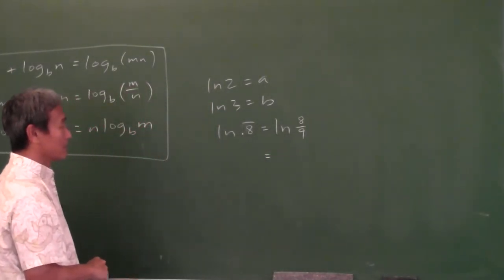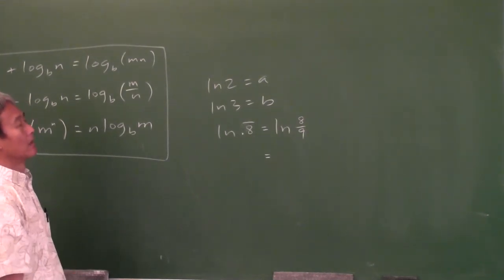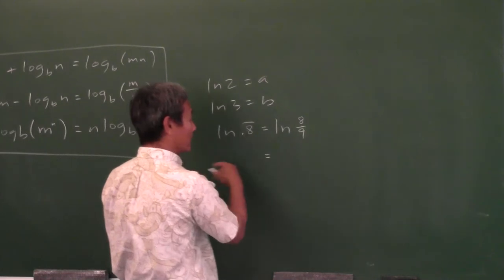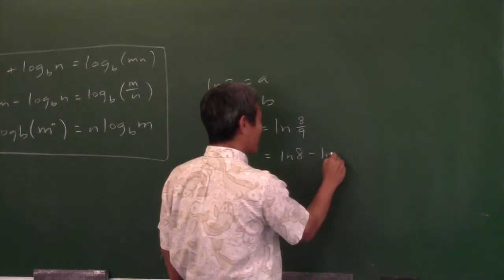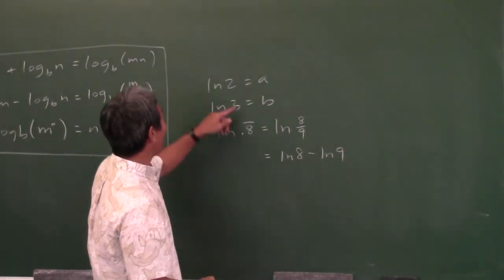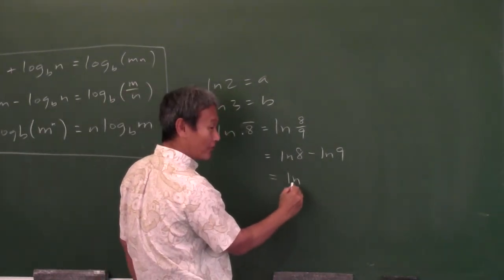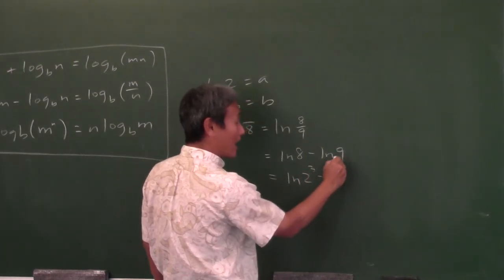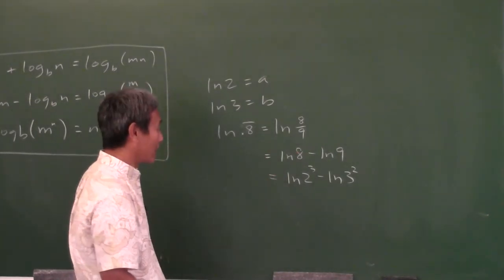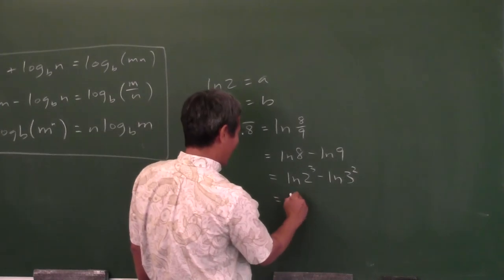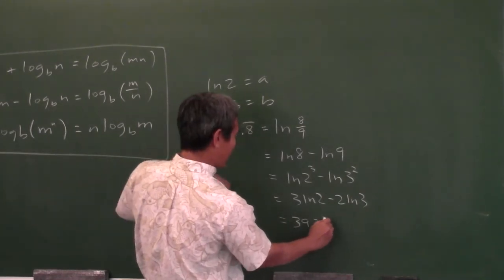Now use your properties of logarithms. Natural log of 8/9 equals natural log of 8 minus natural log of 9. I only have natural log 2 and natural log 3 here. Change 8 to 2 to the third, and 9 to 3 to the second. Then cough up the hairball — put the power in the front. So you get 3 natural log 2 minus 2 natural log 3. Your final answer is 3A minus 2B.